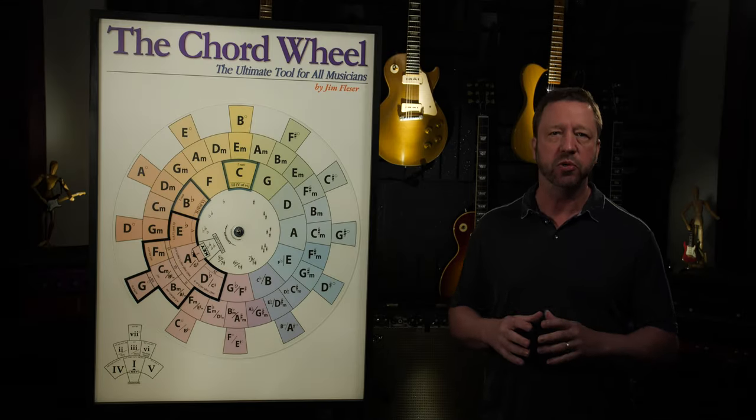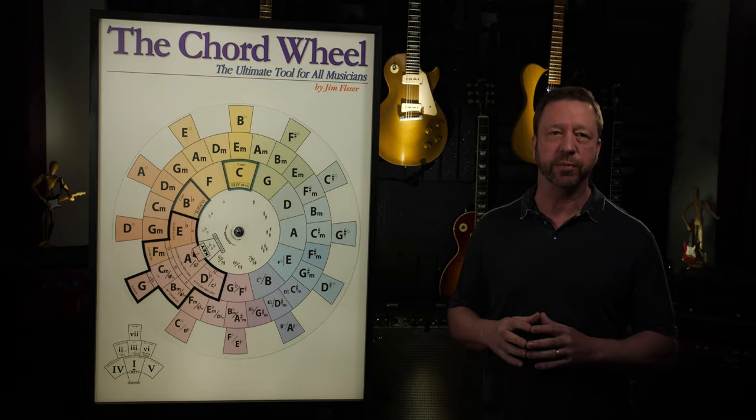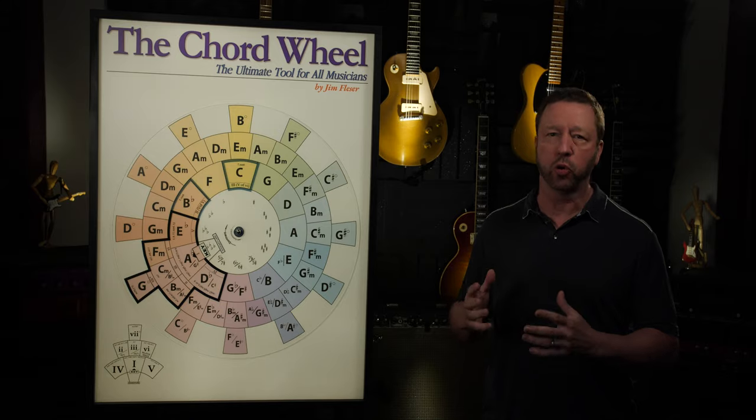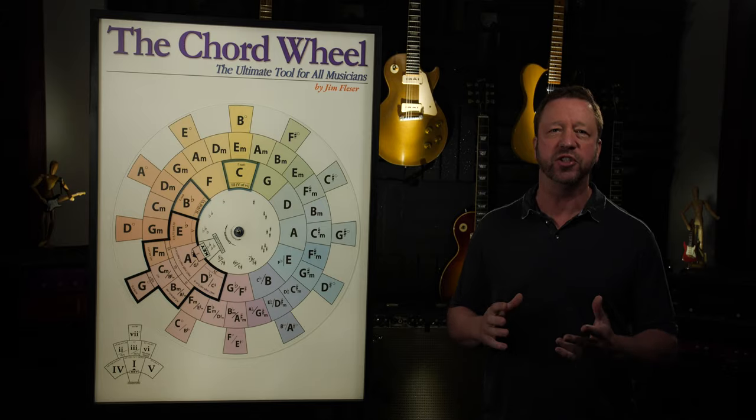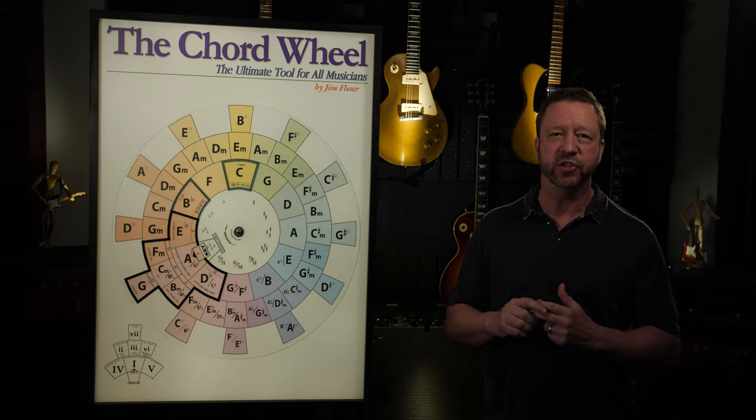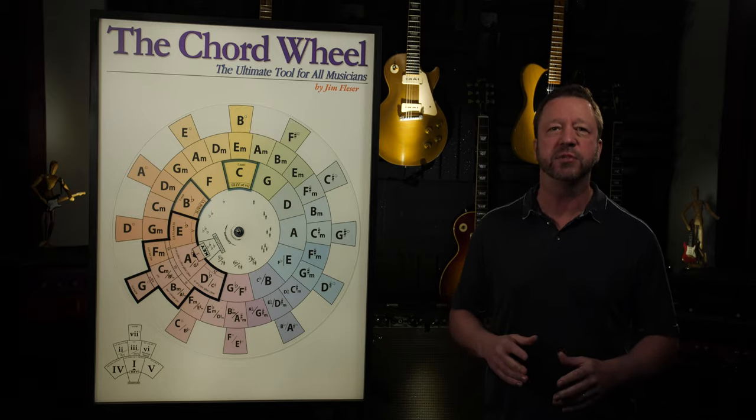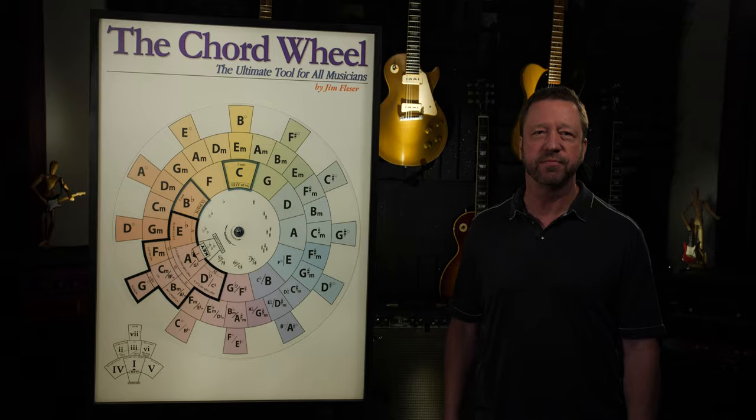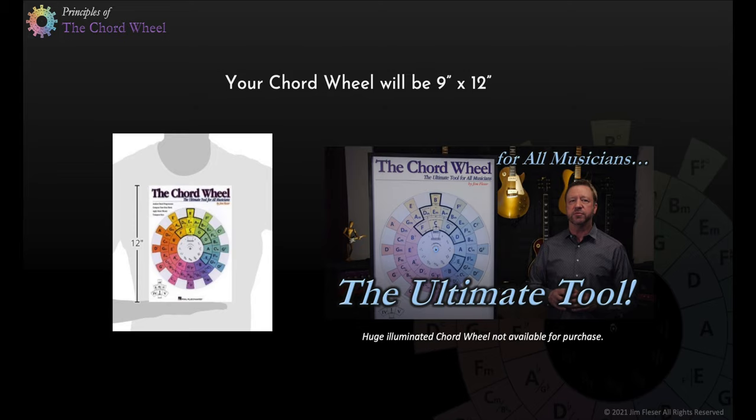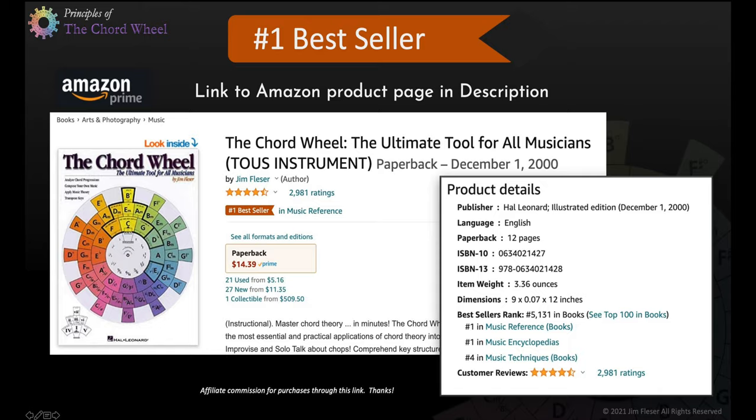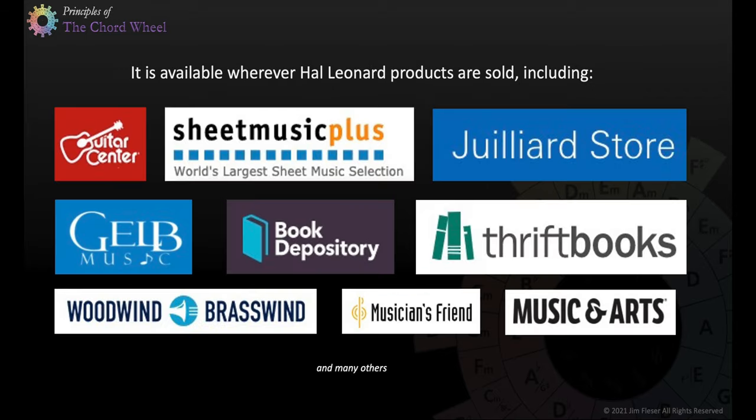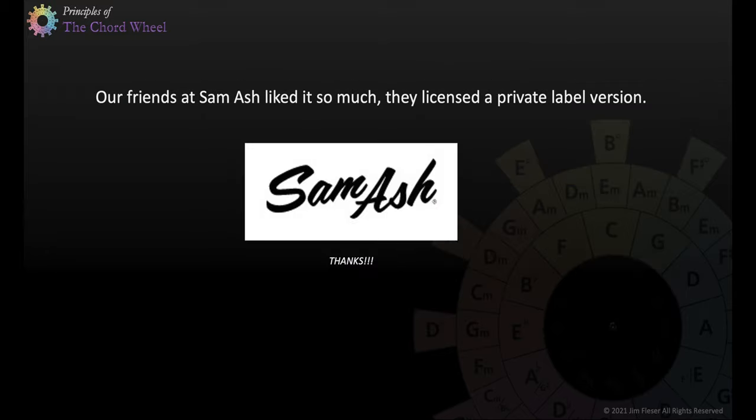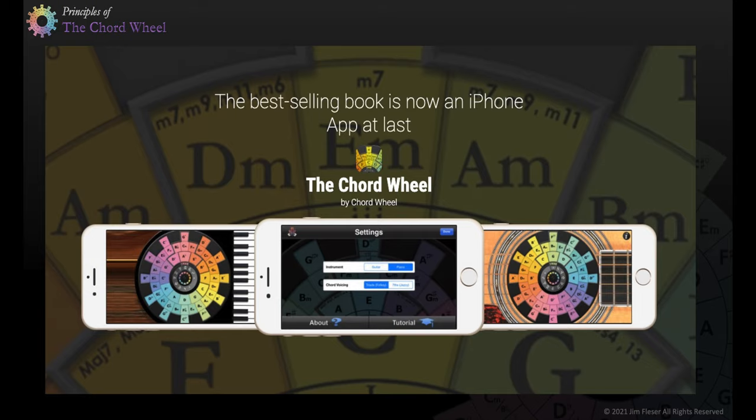This concludes part one. In part two, we'll go back to Rick as he analyzes Radiohead's Creep. We'll look at the progression. We'll analyze four other progressions and show how the chord wheel can help you with this most important task. In the meantime, I want to thank Rick once again for all the education and the entertainment. And when you can put those two things together, it's a true gift. In the meantime, as always, please like and subscribe. And thanks again for watching.